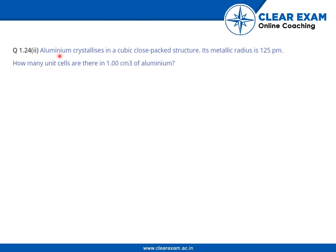The second part is: aluminum crystallizes in a cubic close-packed structure. Its metallic radius is 125 picometer. How many unit cells are there in one centimeter cube of aluminum? For CCP...